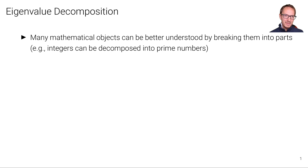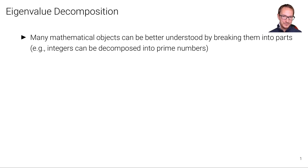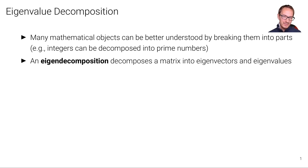Many mathematical objects can be better understood by breaking them into parts. For example, integers can be decomposed into prime numbers, from which we can directly see by which certain integers can be divided. Here, we are interested in decomposing matrices.